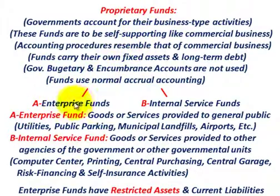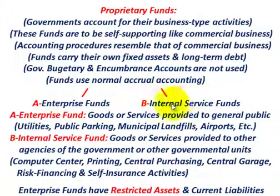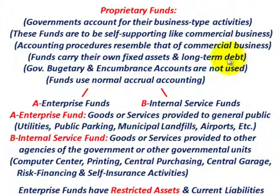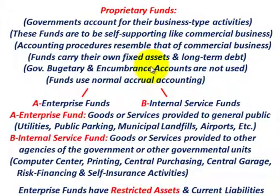Proprietary funds include the enterprise fund and the internal service fund, and we could have a number of those funds in our governmental unit. On these proprietary funds, that's where governments account for their business-type activities. These funds are to be self-supporting, like a commercial business. The accounting procedures resemble that of a commercial business. The funds carry their own fixed assets and long-term debt, and governmental budgetary accounts and encumbrance accounts for expenditures and contracts are not used with proprietary funds. These funds use normal accrual accounting.